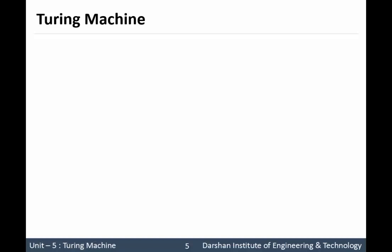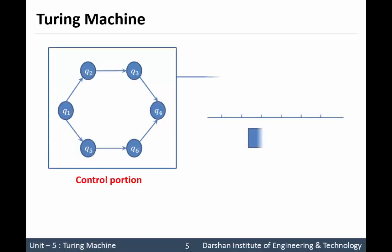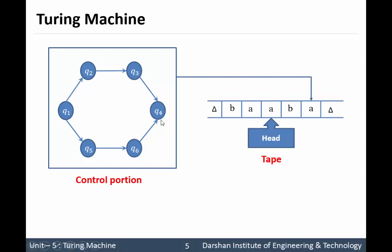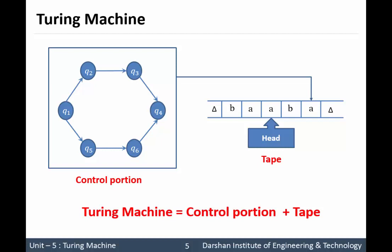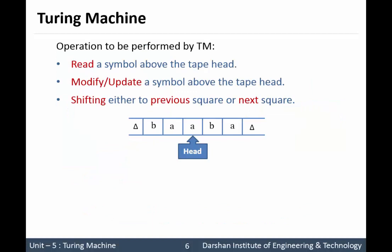A Turing machine is a combination of a control portion plus the tape. The control portion is similar to FA or PDA — it is a diagram that is deterministic in nature. So in short, a Turing machine is a combination of control portion and tape. The operations that can be performed by a Turing machine are: read operation, modify or update operation, and shift operation.